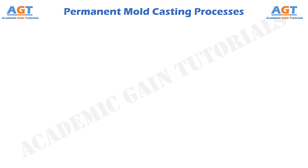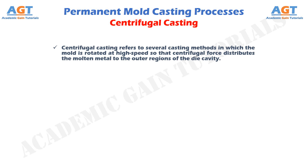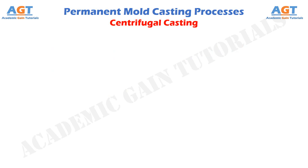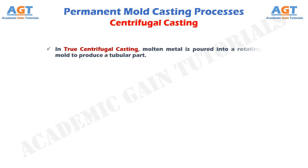Into the topic. Centrifugal casting refers to several casting methods in which the mold is rotated at high speed so that centrifugal force distributes the molten metal to the outer regions of the die cavity. The group includes true centrifugal casting, semi centrifugal casting, and centrifuge casting.